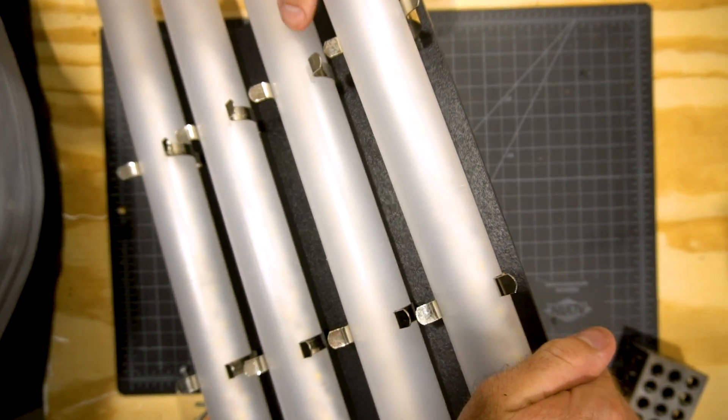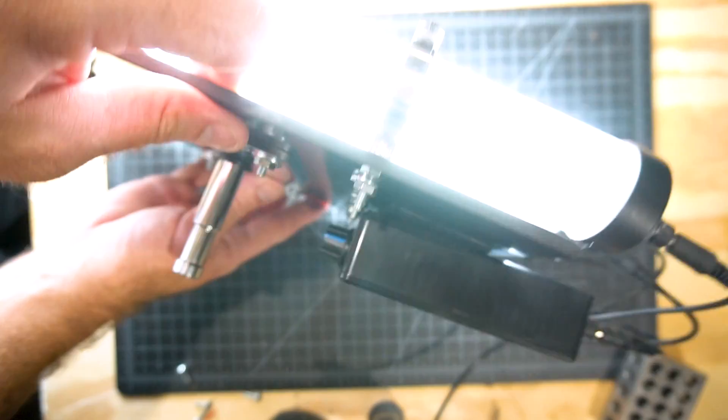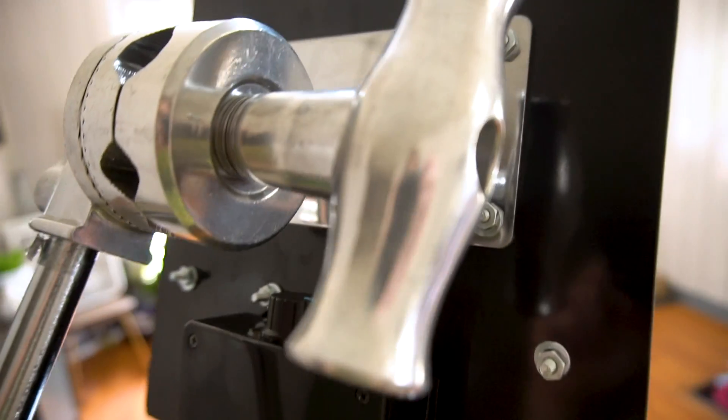Now snap those lights back in, and then connect everything. You should now have your very own bank of LED tube lights. To use, just connect the baby pin to a grip head on your light stand and turn them on.